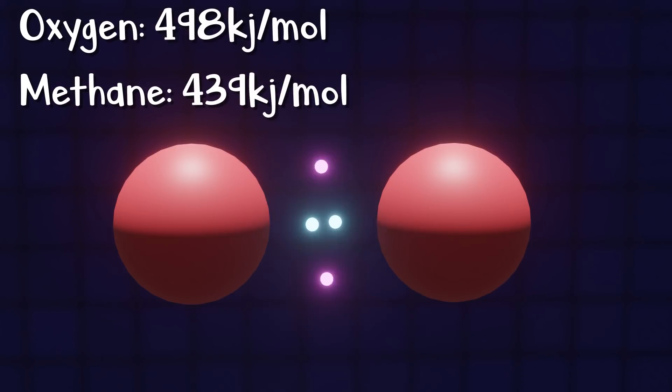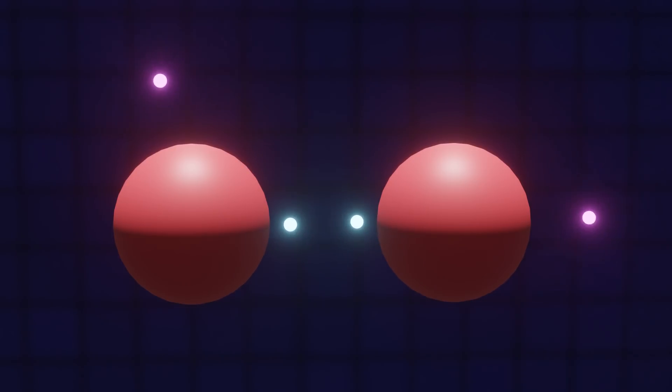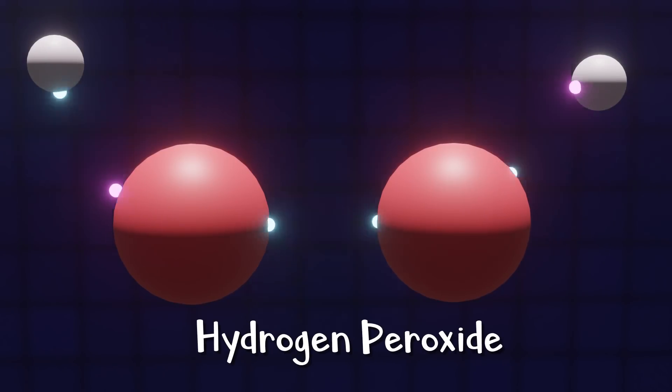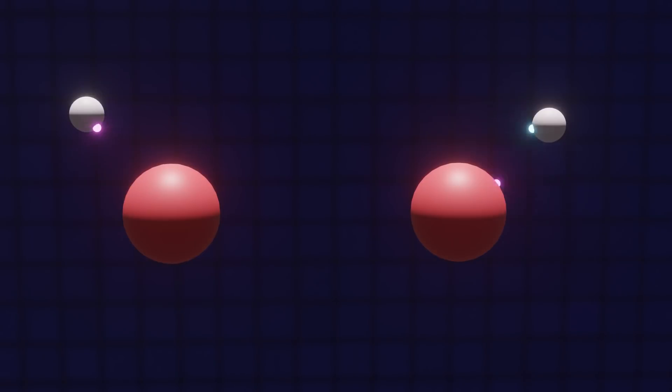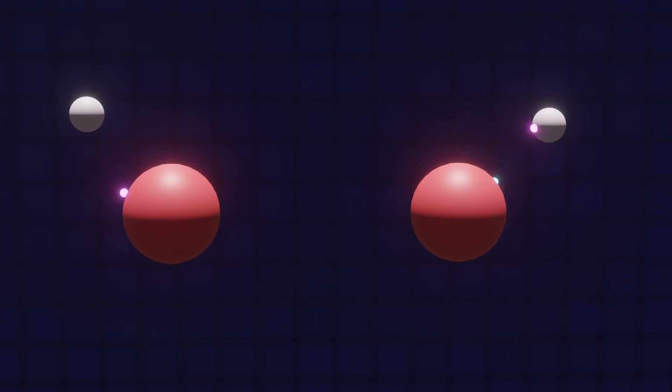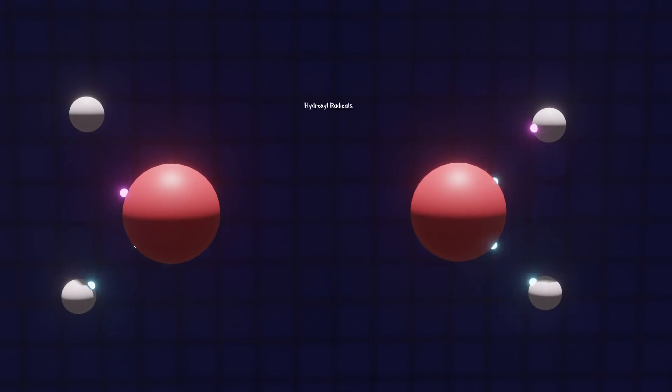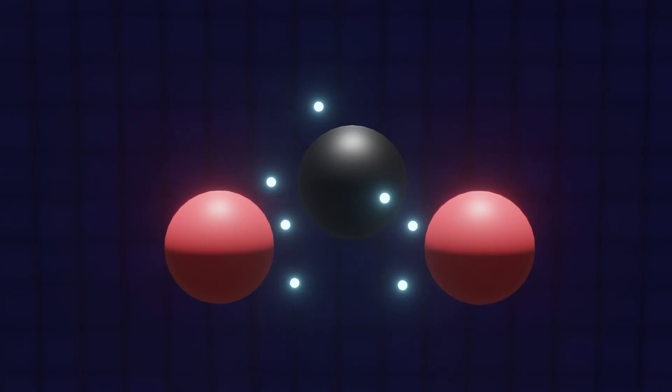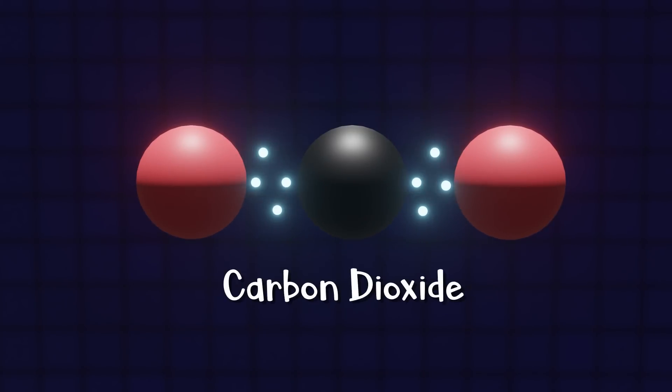So after the pi bond of oxygen splits, these valence electrons usually react with the hydrogens of an already dissociated methane forming hydrogen peroxide. At these temperatures, this bond between the oxygens lasts but an instant and splits forming two hydroxyl radicals. These then go to react with two more hydrogens forming two water molecules. Another oxygen molecule reacts with carbon in a very similar fashion to produce carbon dioxide.